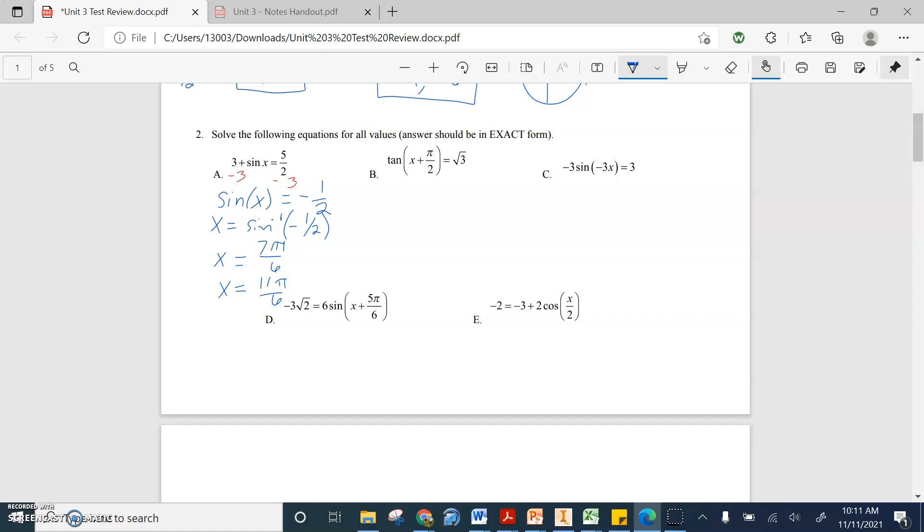Now, we would normally be done, like question one, we'd be done right now. But it is asking for all values. So what happens is, if I were to go to seven pi over six, take the sine ratio, I get negative one half.